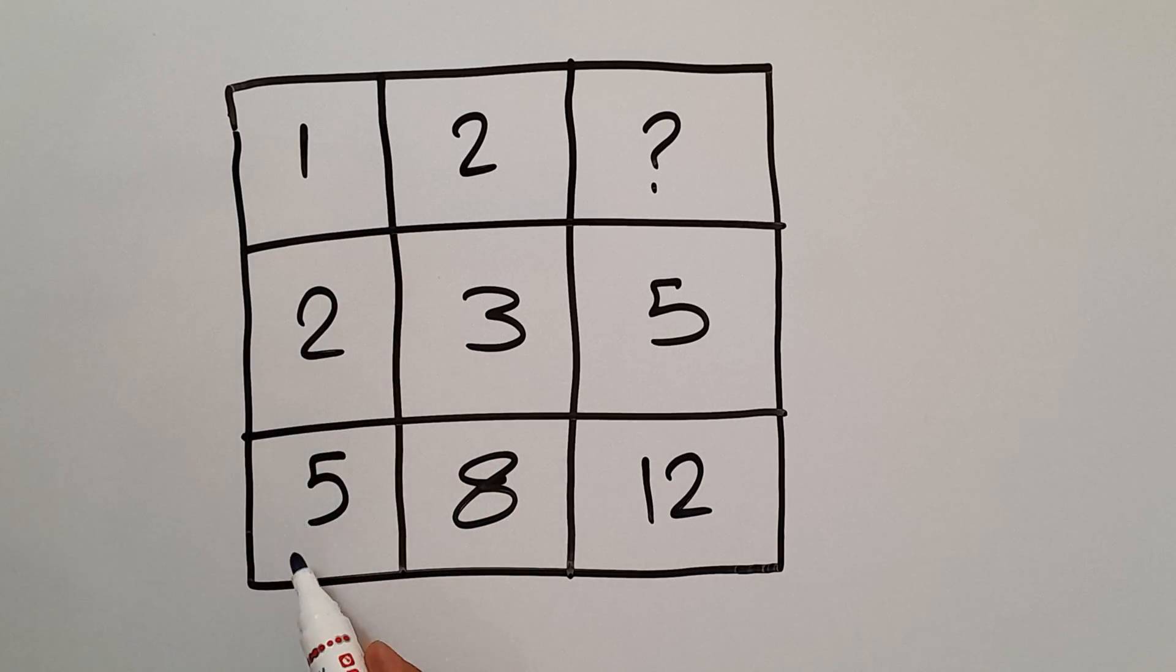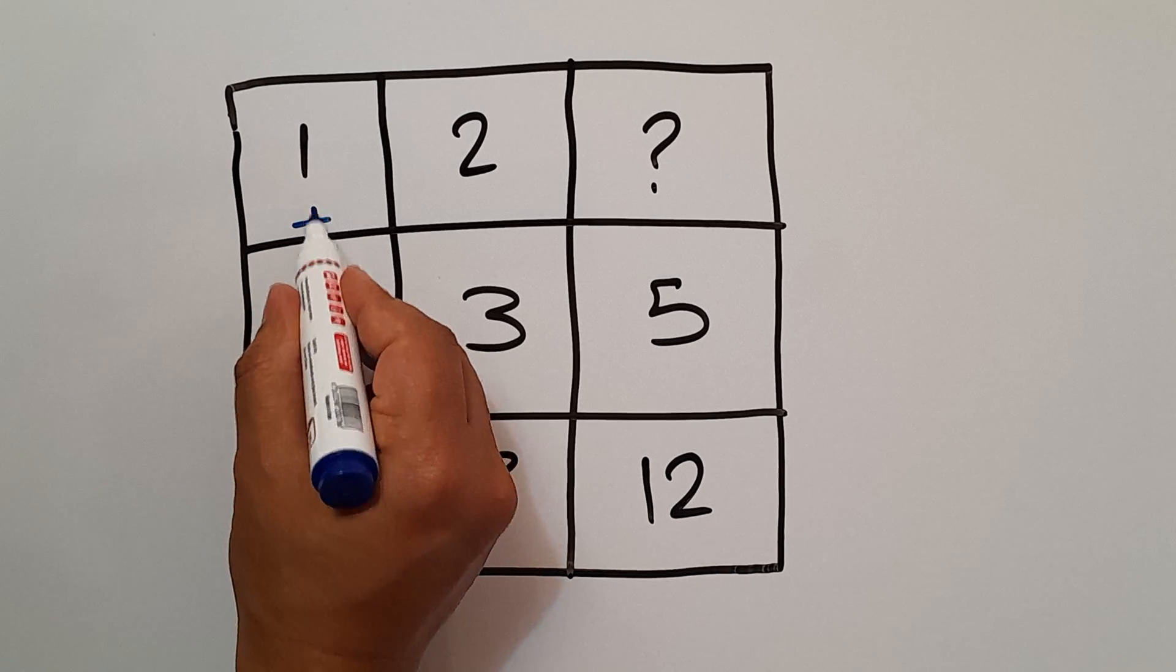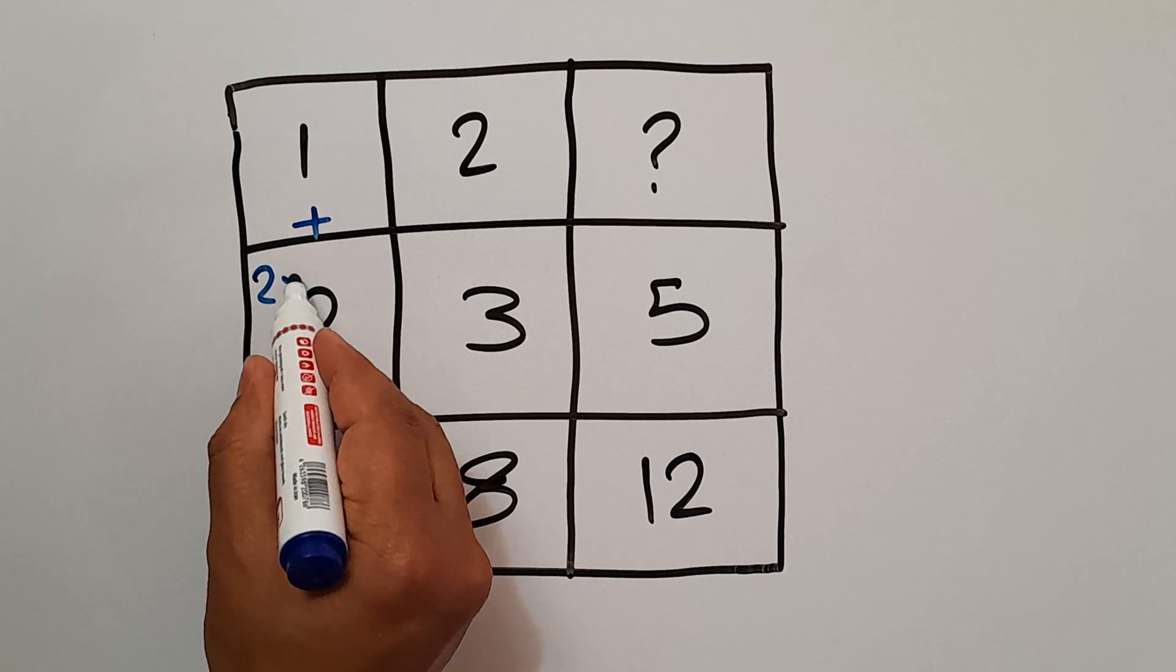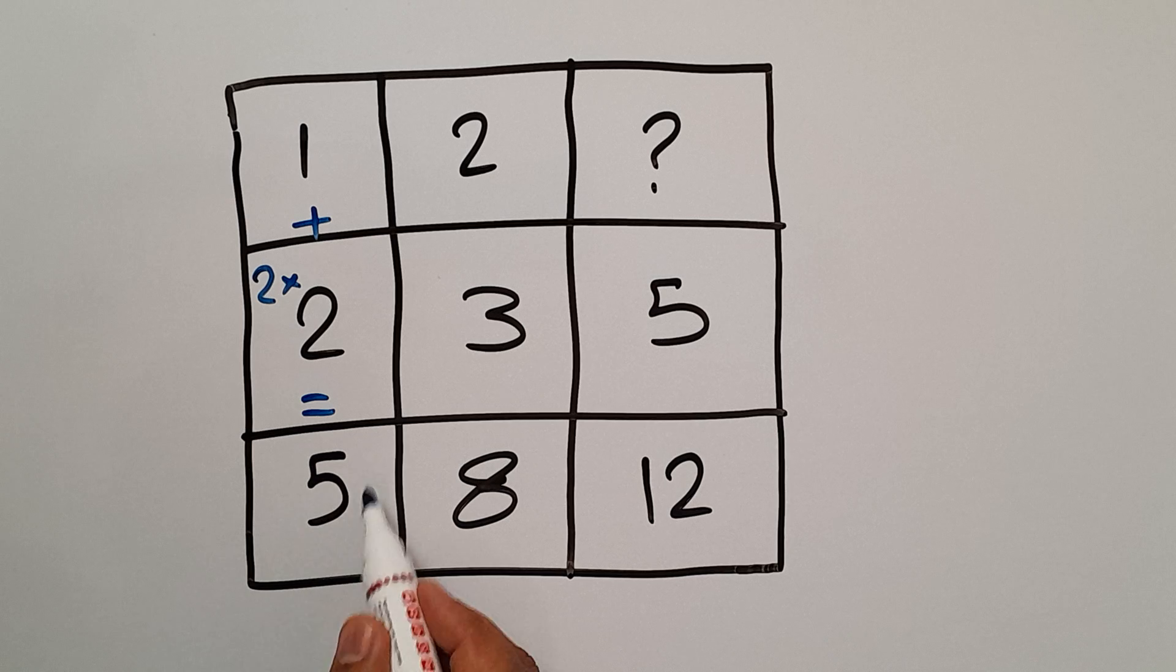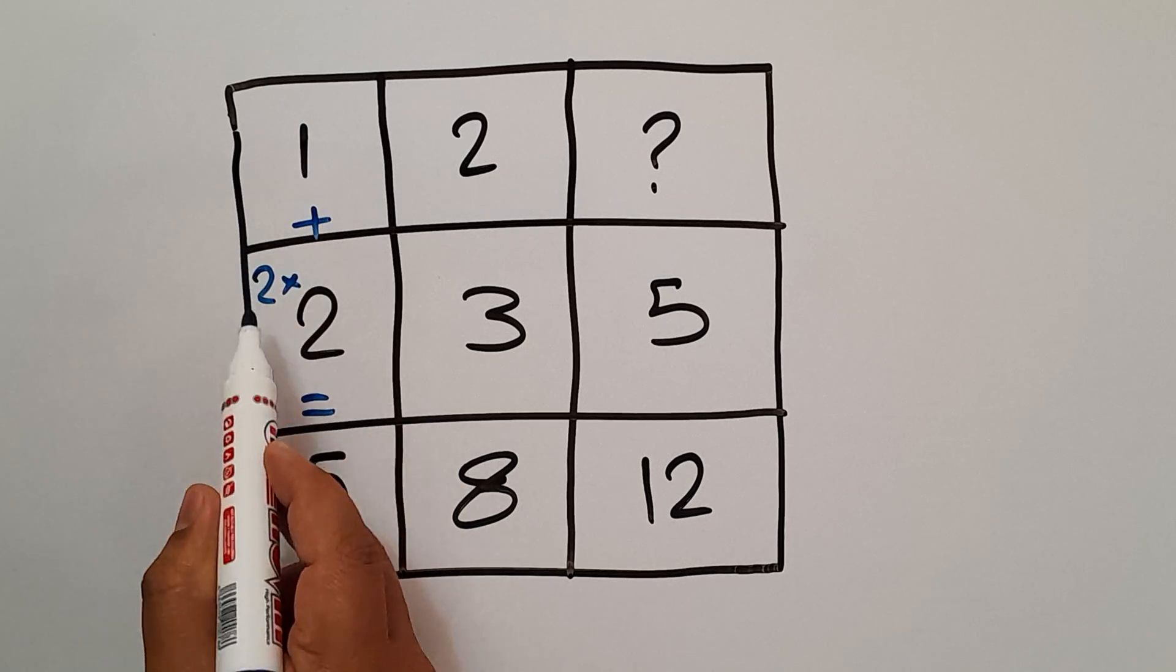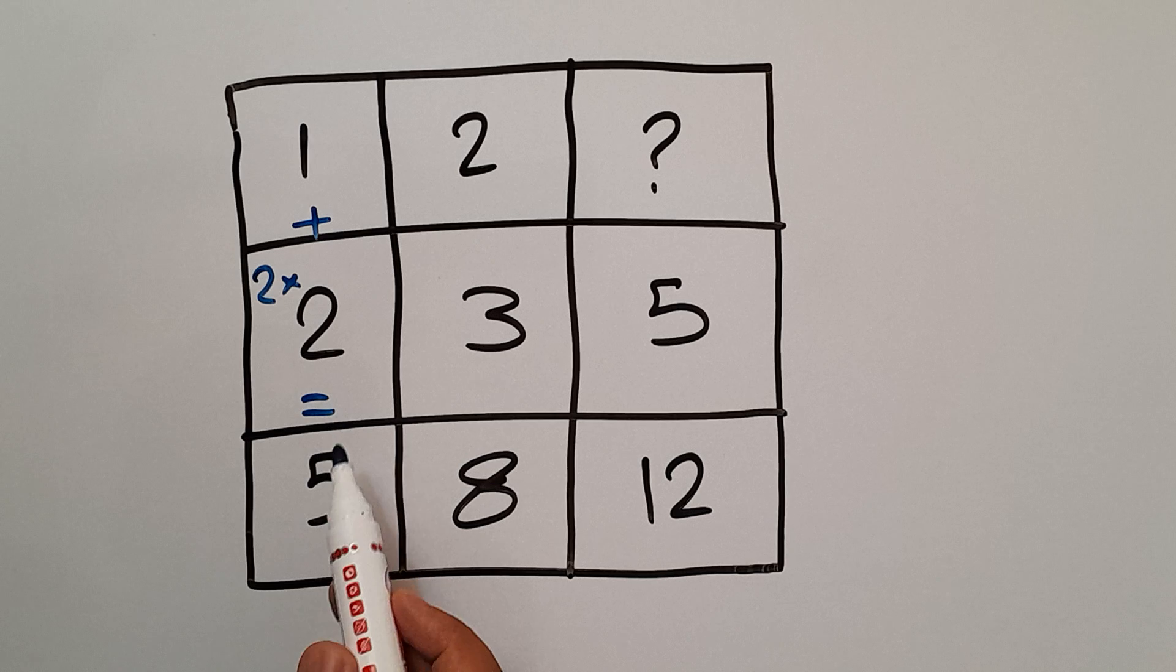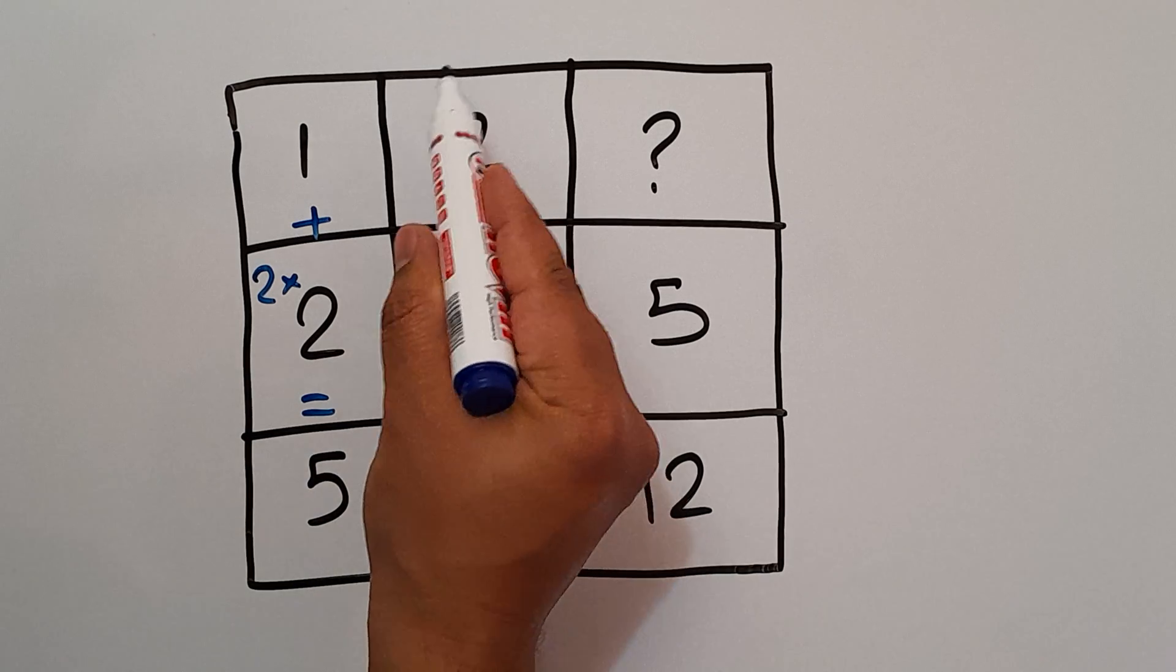In the first column, we have 1, 2, and 5. 1 plus 2 times 2 gives us 5 because 2 times 2 is 4, and 1 plus 4 is 5.